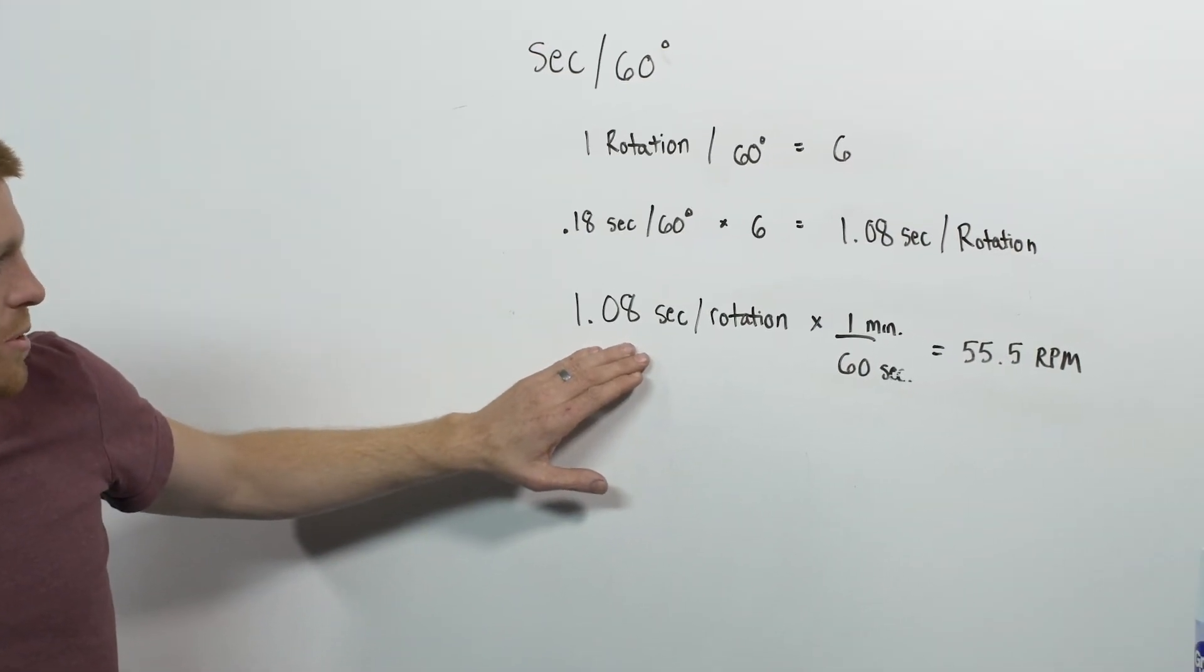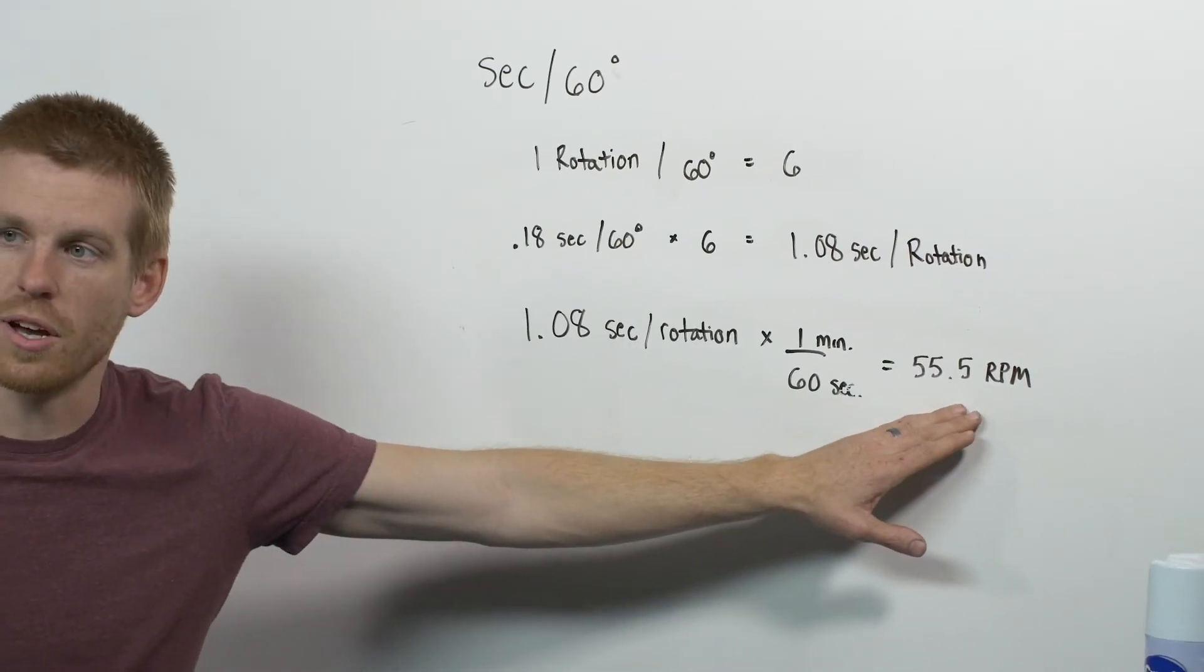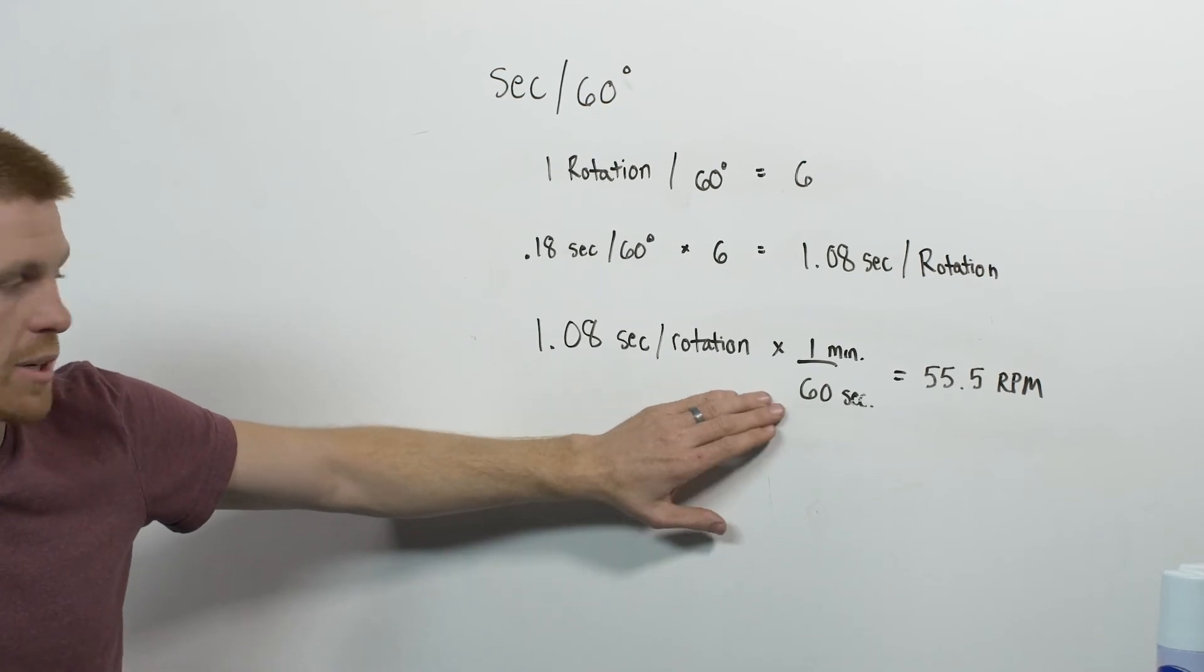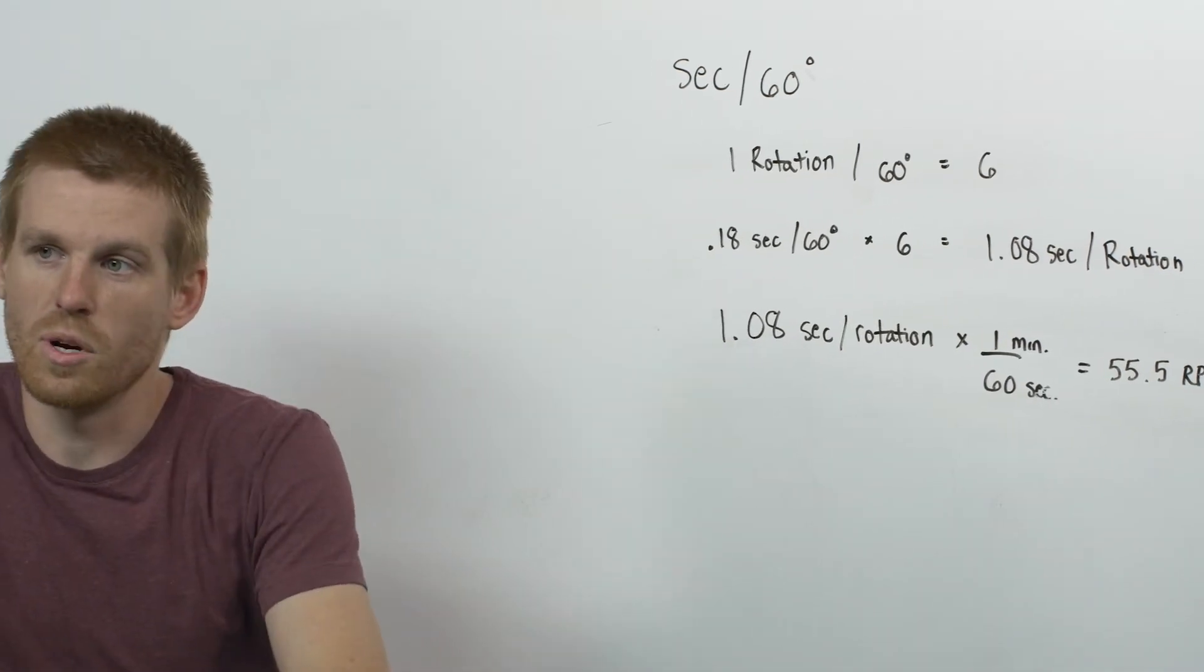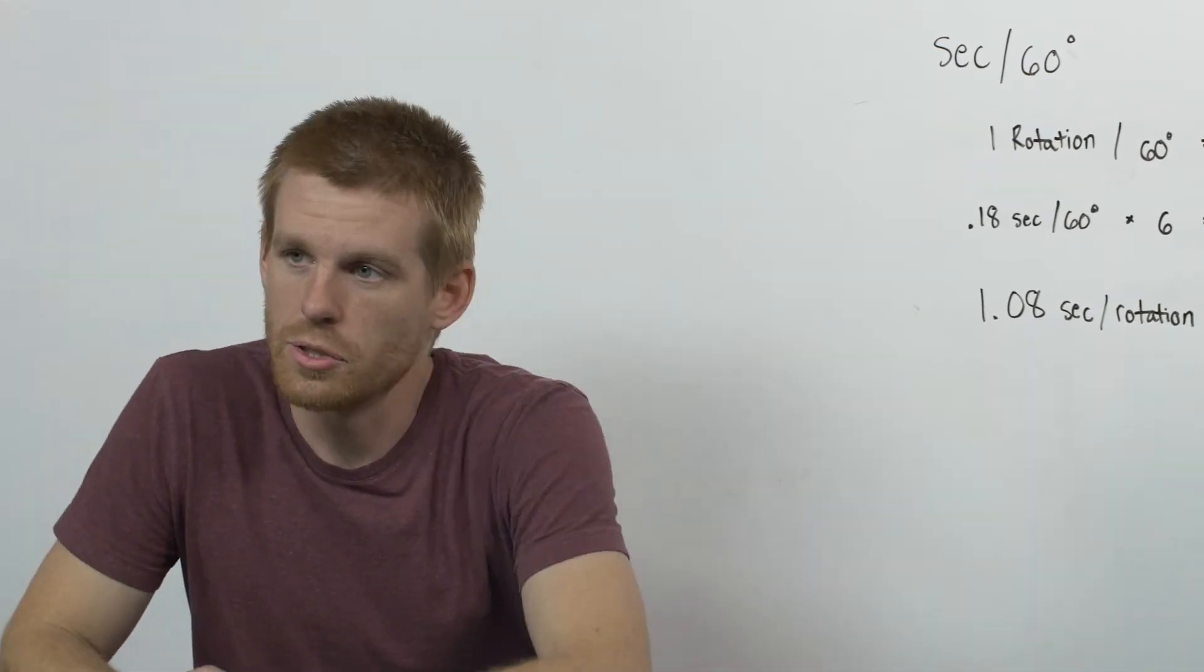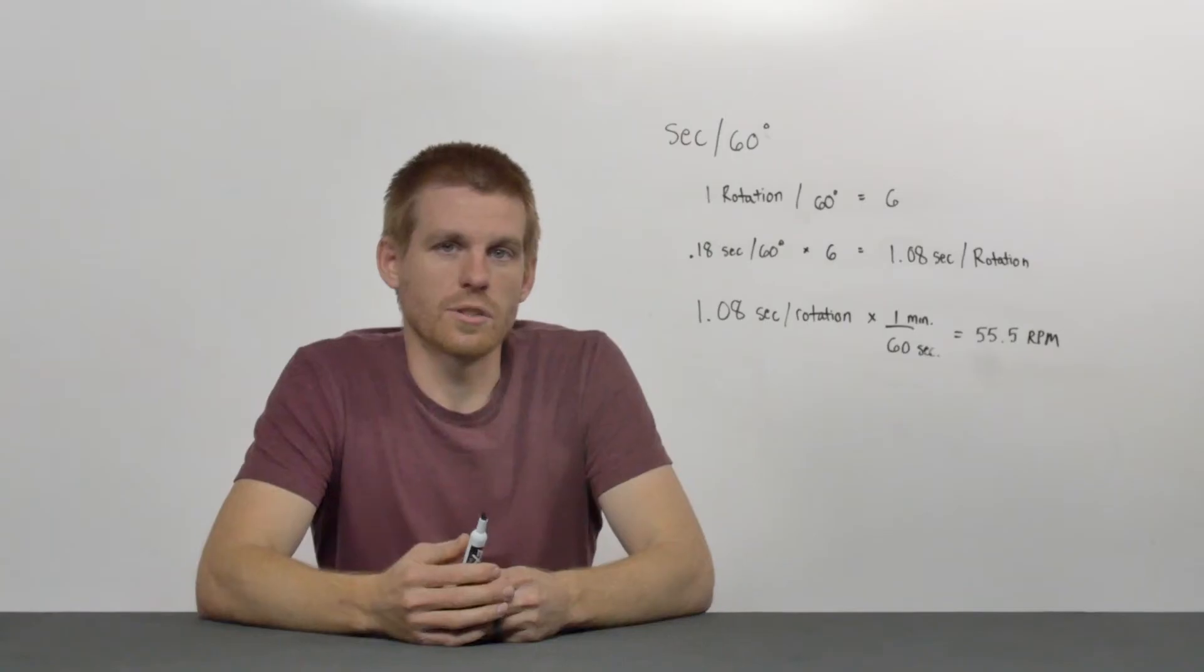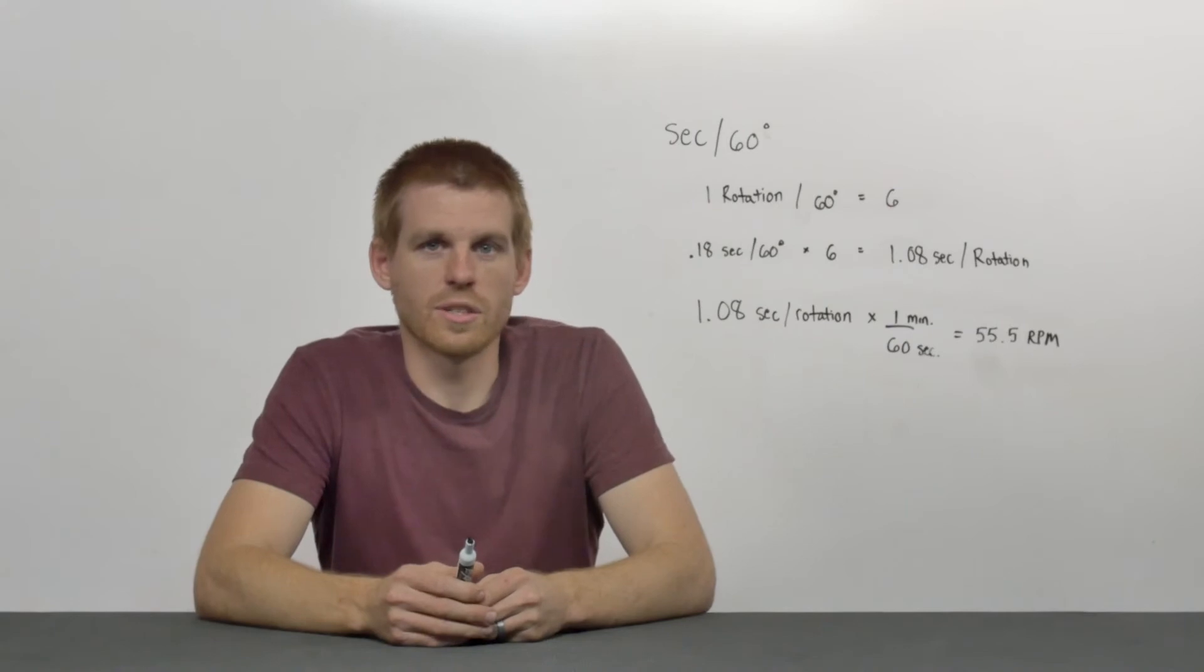1.08 seconds per rotation equates to 55.5 RPM. And I've done that by dividing by 60 seconds because there are 60 seconds in one minute. So that servo, if it was modified to continuous rotation, would rotate at just over one second per rotation.